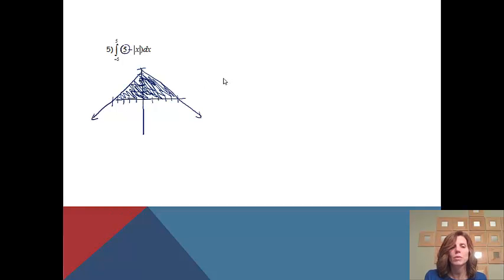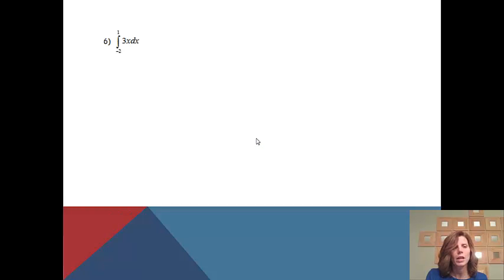I notice that it's a triangle. So we'll just do 1 half base times height. It's going to be 1 half times the base. This whole length is 10, and the height is 5. So 1 half times 10 times 5, I will get 25. And that will be the integral.